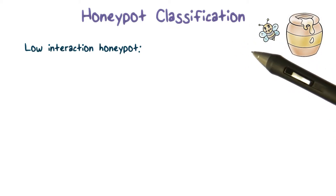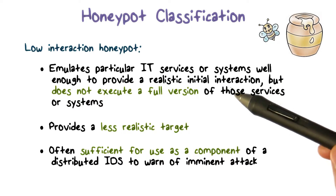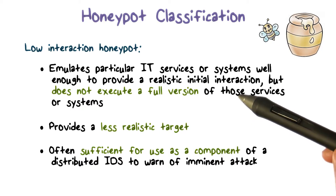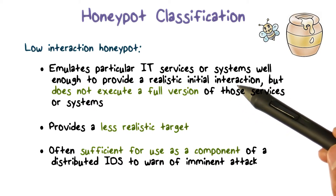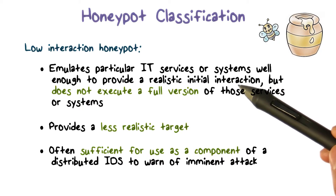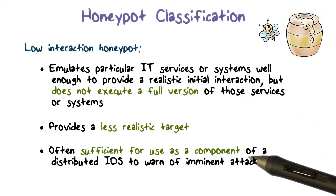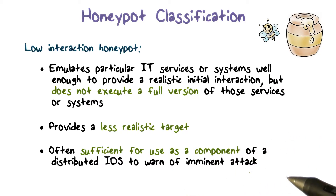Honeypots can be low or high interaction. A low interaction honeypot typically emulates some network services, such as a web server. For example, it can speak the HTTP protocol, but it is not the full version of the service — the emulated web server does not have all the web contents and server-side programs. A low interaction honeypot is typically sufficient to detect network scans, probes, and imminent attacks.